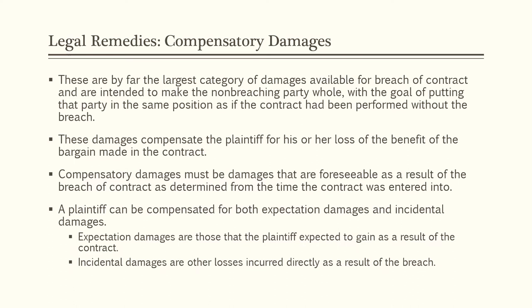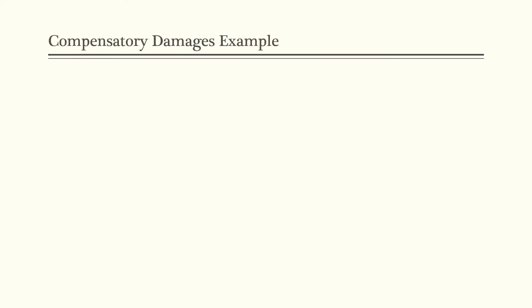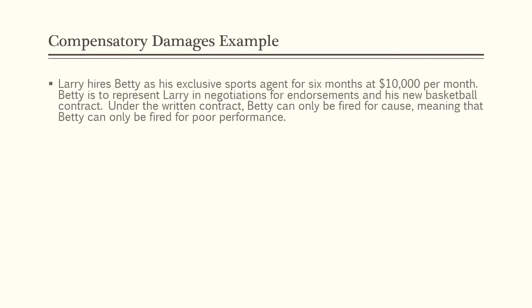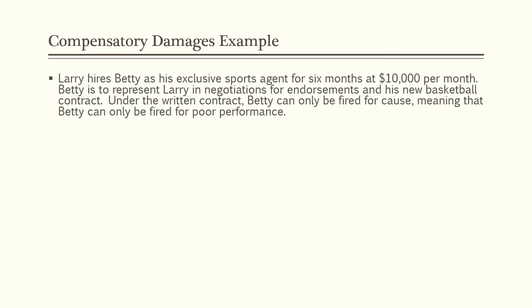A plaintiff can be compensated for both expectation damages and incidental damages. Expectation damages are those that the plaintiff expected to gain as a result of the contract. Incidental damages are other losses incurred directly as a result of the breach. Here is an example of compensatory damages: Larry hires Betty as his exclusive sports agent for six months at $10,000 per month to represent him in negotiations for endorsements and his new basketball contract.